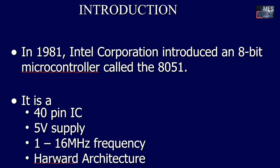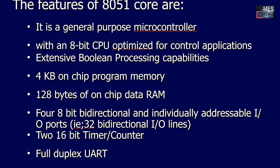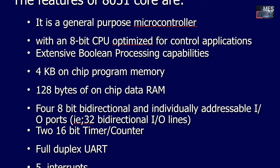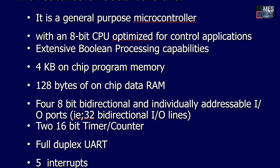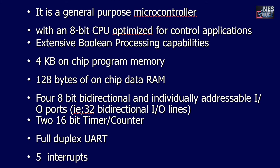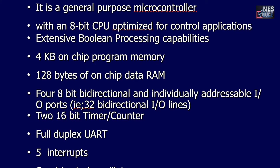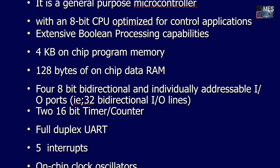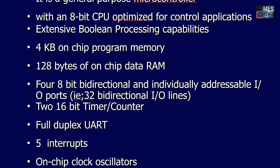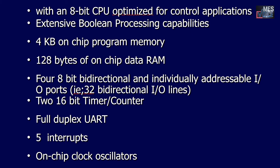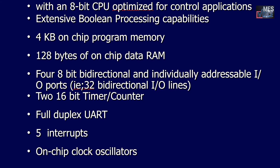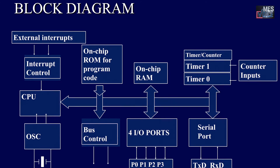In 1981, Intel Corporation introduced an 8-bit microcontroller called the 8051. It is a 40-pin IC with a 5-volt supply, needs 1 to 16 megahertz clock frequency, and has Harvard architecture. The features of the 8051 core are: a general-purpose microcontroller with an 8-bit CPU optimized for control applications, extensive boolean processing capabilities, 4 kilobytes of on-chip program memory, 128 bytes of on-chip data RAM, four 8-bit bi-directional and individually addressable I/O ports, two 16-bit timers/counters, full-duplex UART (Universal Asynchronous Receiver Transmitter), 5 interrupts, and on-chip clock oscillators. This is the block diagram of the 8051 microcontroller.